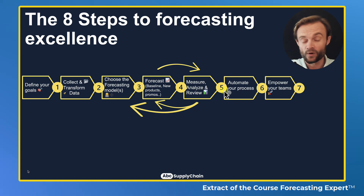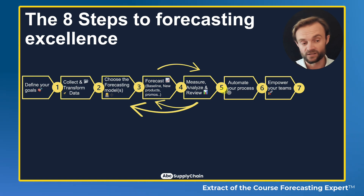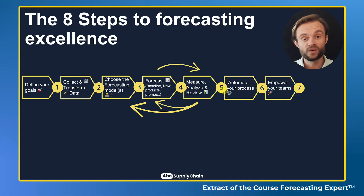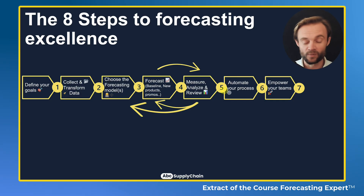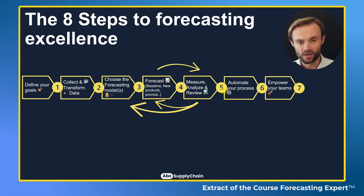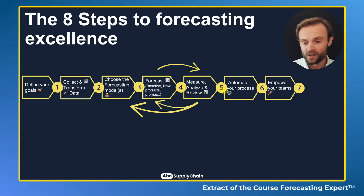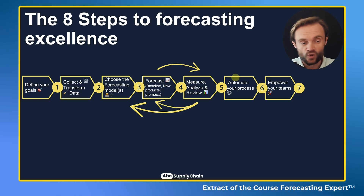Number seven: you need to empower your team. You need to become the facilitator of the forecast, because one of the main goals is to feed the model with the right data. You need the right data from the right people by implementing what we call, for example, an S&OP process — Sales and Operations Planning — and make sure the whole company is aligned. So: empower, facilitate, and communicate.